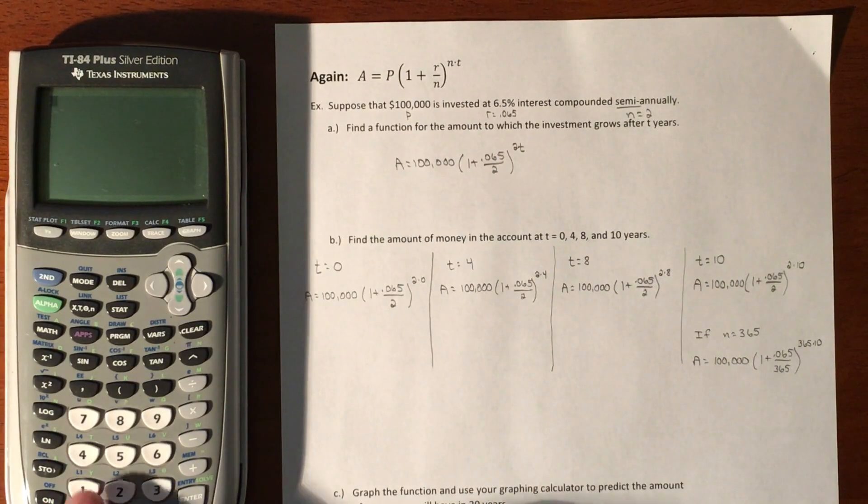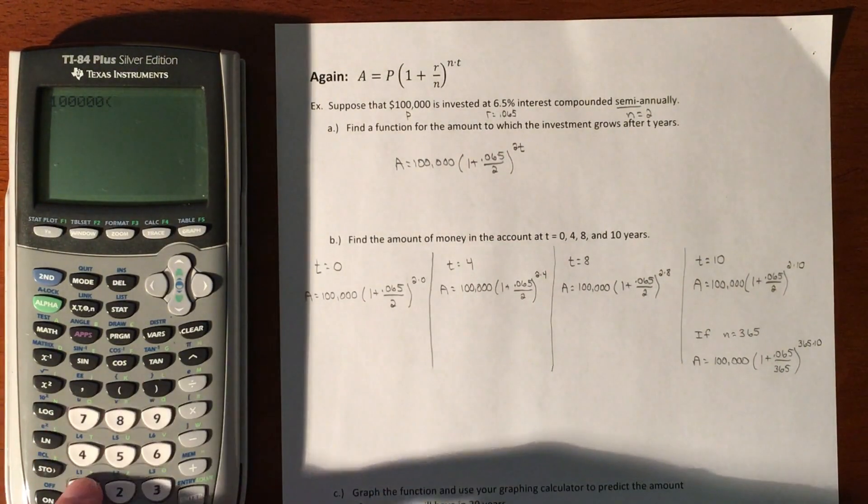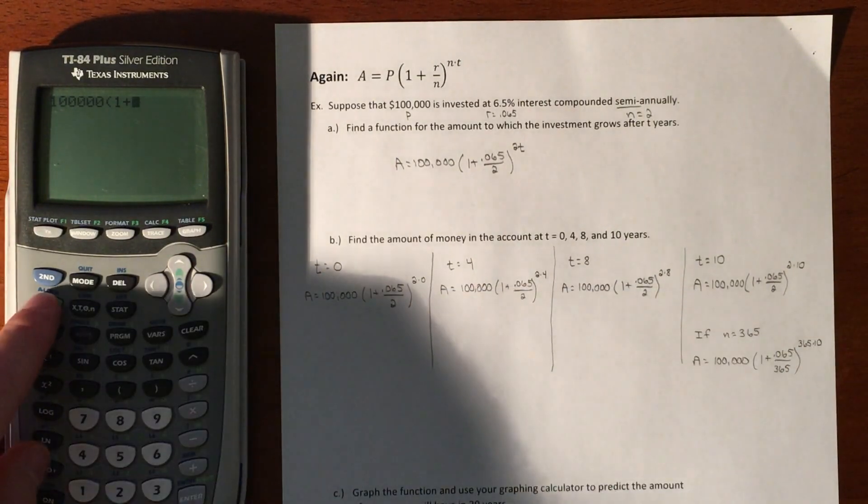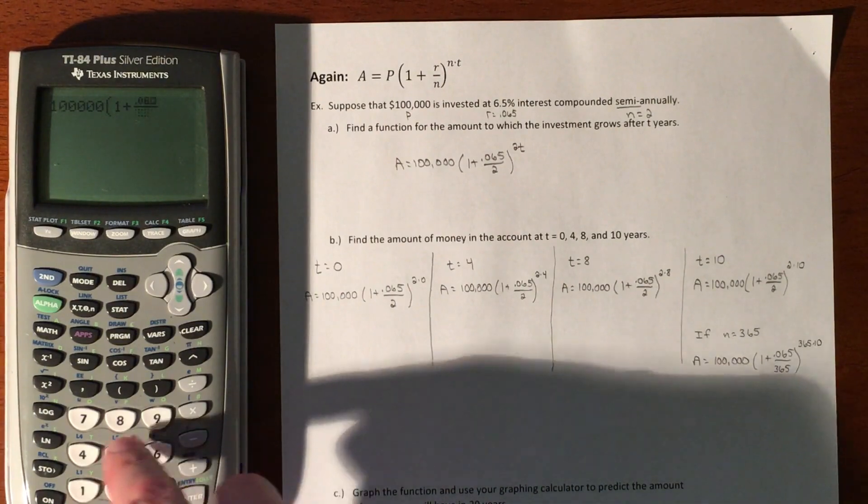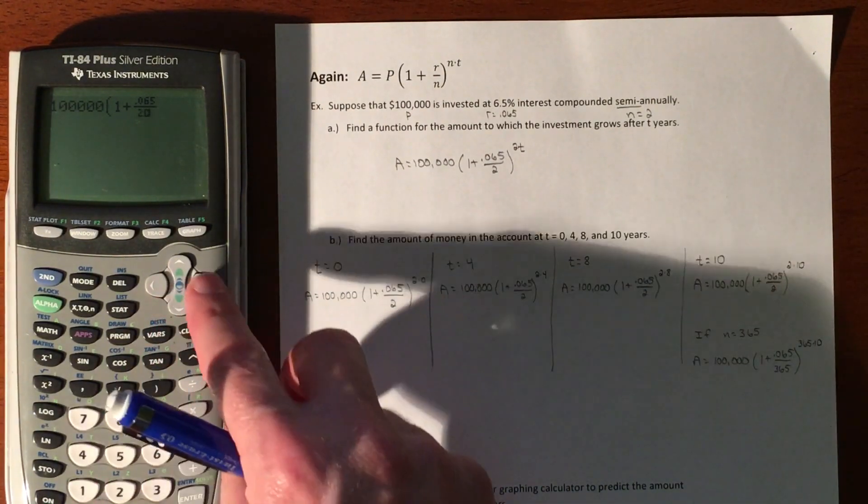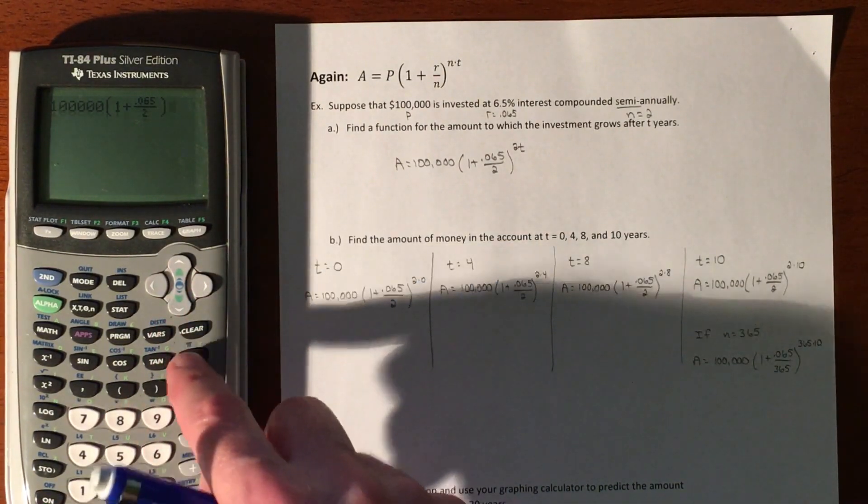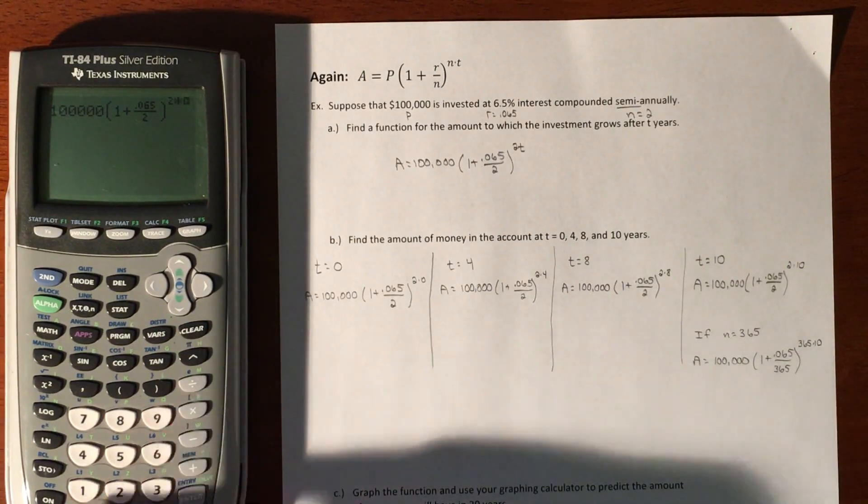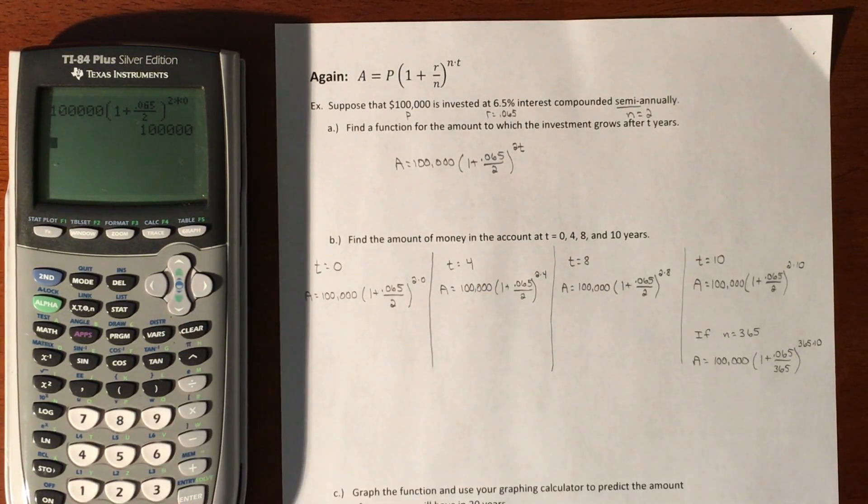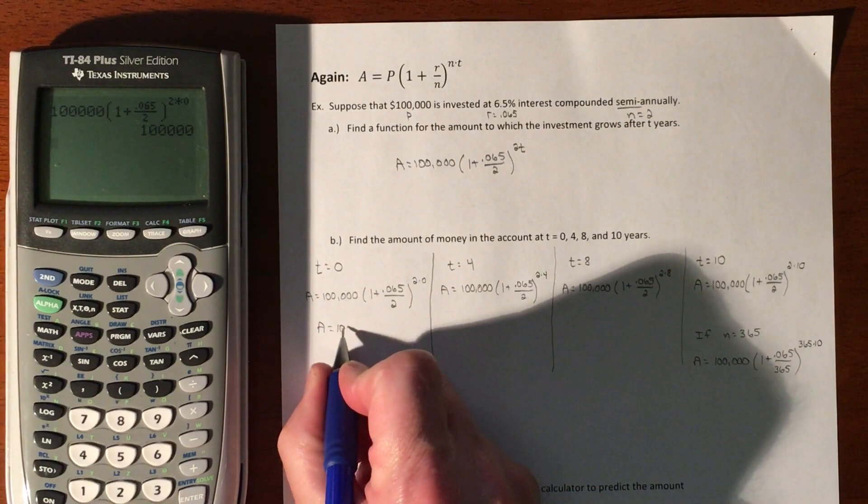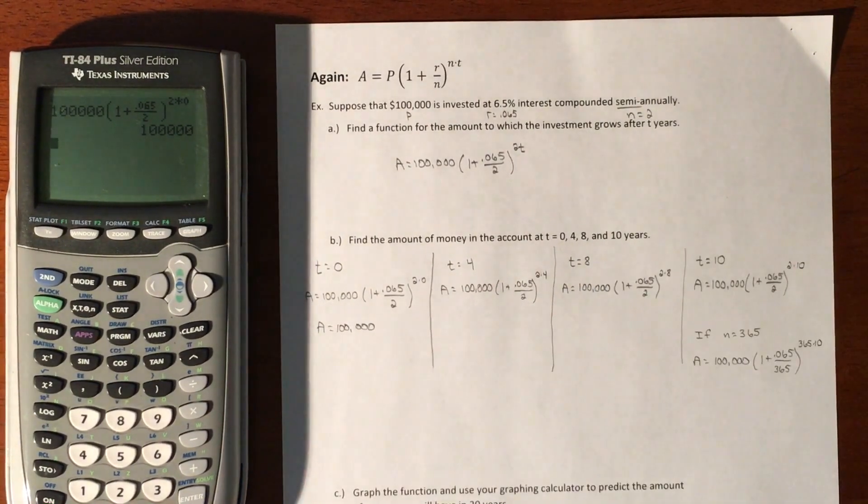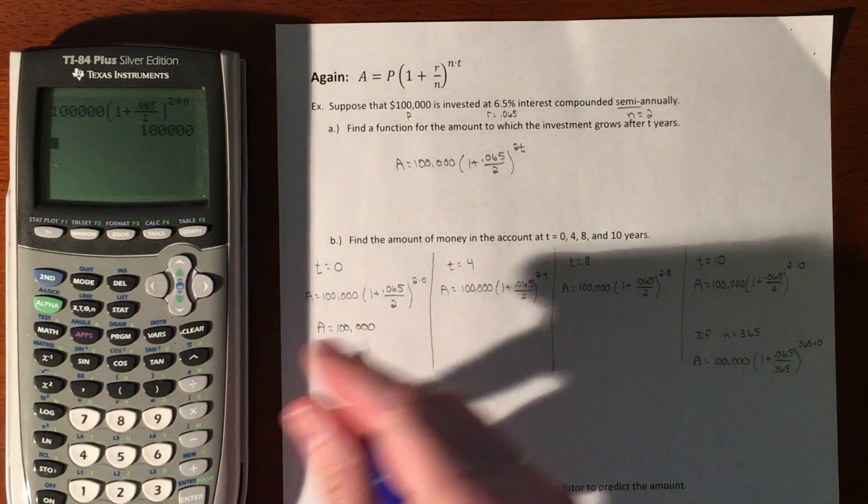Our equation is 100,000 times (1 + 0.065/2)^(2×0). If we put money in and it sits in an account for zero years, our final output should be exactly where we started because we gave it no time to earn interest.